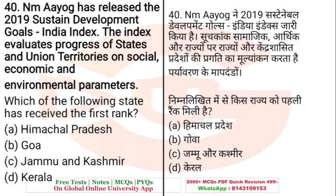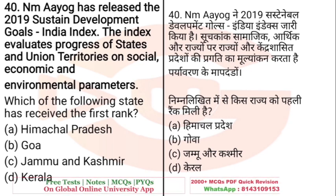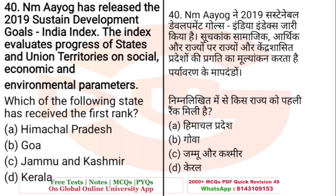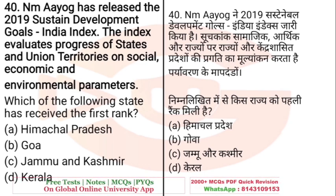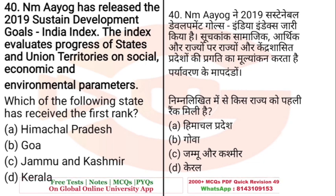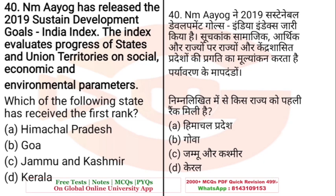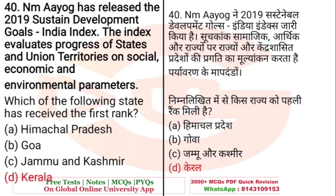Question: NITI Aayog has released the 2019 Sustainable Development Goals India Index. The index evaluates progress of states and union territories on social, economic and environmental parameters. Which of the following states has received the first rank? A. Himachal Pradesh, B. Goa, C. Jammu and Kashmir, D. Kerala. The NITI Aayog SDG India Index 2019, which evaluates states' social, economic and environmental progress — the right answer is Kerala.